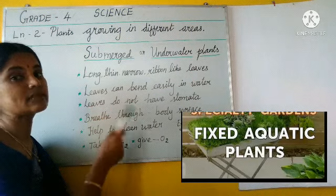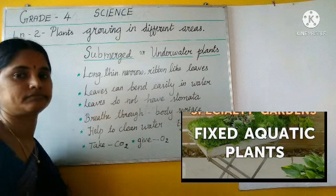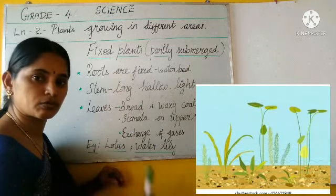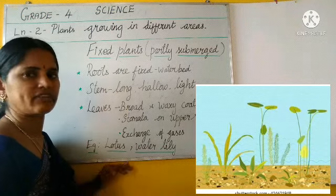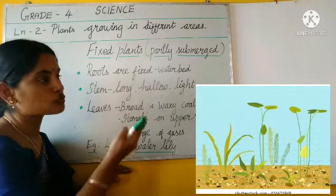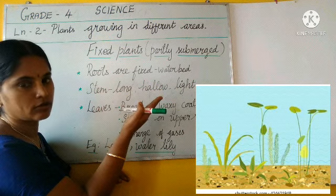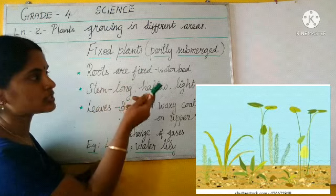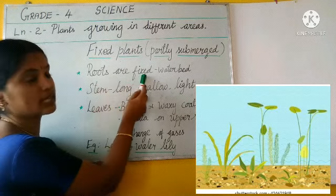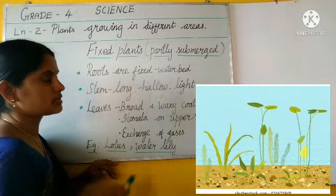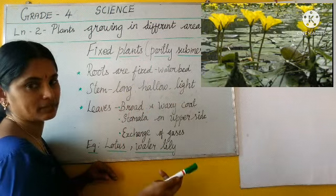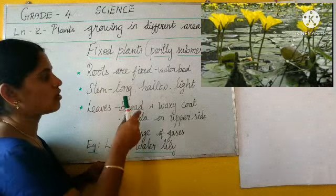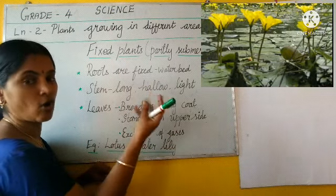Now we will see fixed plants — fixed water plants. These plants are partially submerged and fixed in the soil of small ponds. Lily and lotus are called fixed plants. The root is fixed in the water bed. Look at the stem of the plant — it is long, hollow, and light, with air-filled empty space inside.